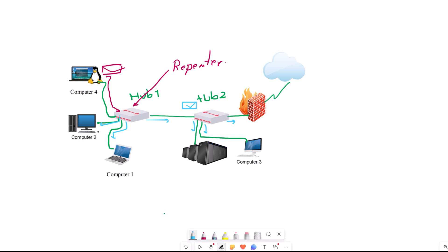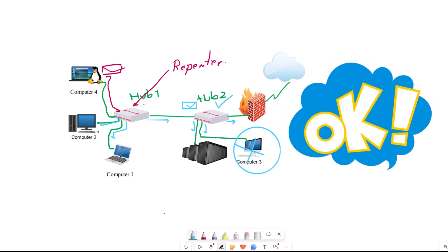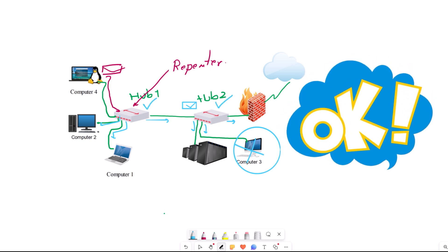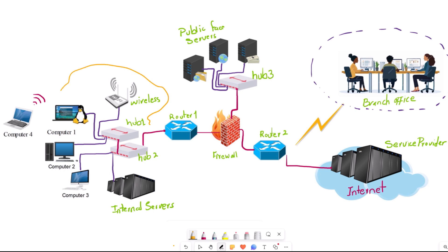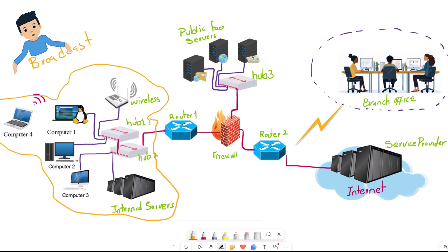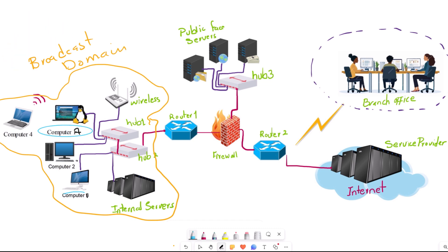Hubs are similar to the bus topology but with one key difference: it is still true that only one device can send data at a time, but if one device is disconnected from the network, the network will not fail and other devices are still able to send and receive data. In this networking setup, all connected devices are in one broadcast domain.